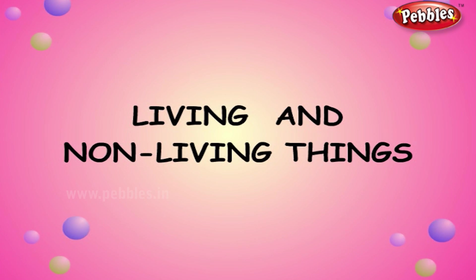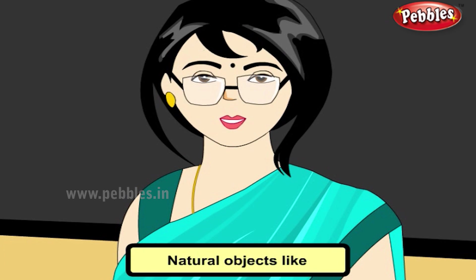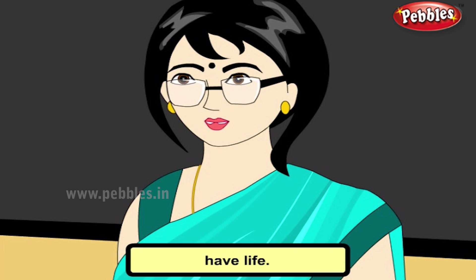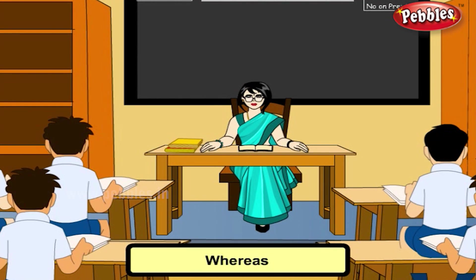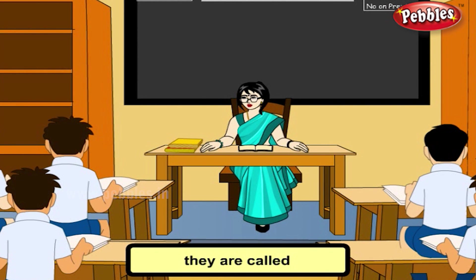Living and non-living things. Now, let us see what are living things and non-living things. Natural objects like cat, dog, bird and plant have life — they are known as living objects. Whereas objects like sun, moon, table, chair and car do not have life — they are called non-living objects.